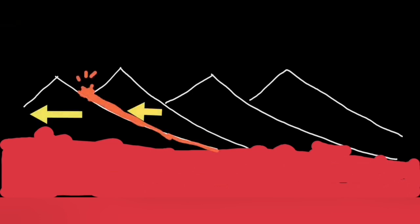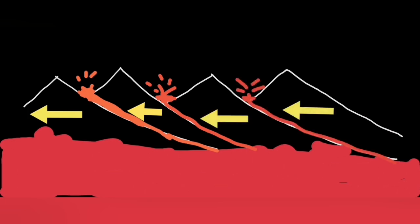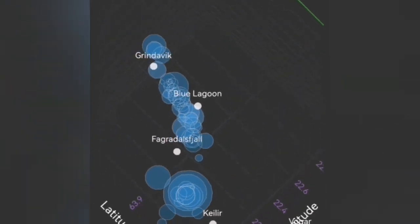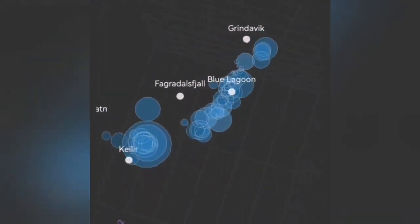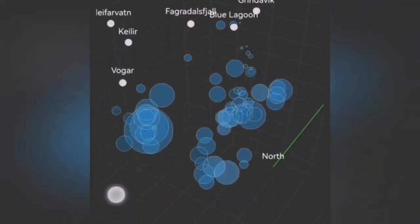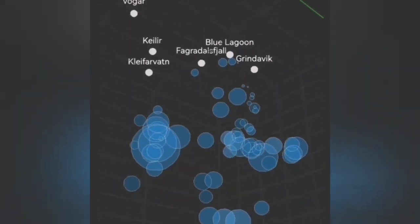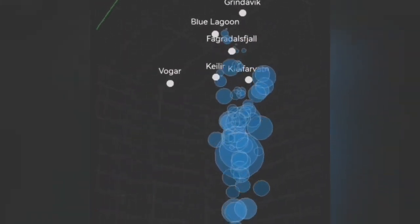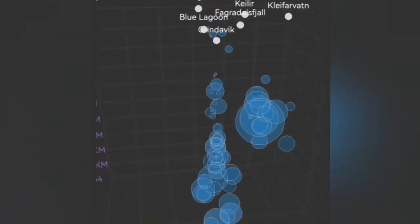We had the Grindavik system related to Svartsengi erupting now, and we have now in the Krýsuvík volcanic system some activity. Magma probably is rising again. I'll show you here, clear for what is related to that Krýsuvík volcanic system, and Grindavik, you can see that.